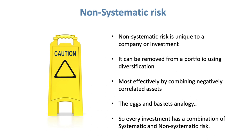This is the whole eggs-and-baskets analogy: if you want to reduce non-systematic risk, you spread your money around. Diversification comes in many shapes and sizes — it's not just about asset allocation. There's geographical diversification, active versus passive management, and company sizes both big and small. Every investment has a combination of systematic and non-systematic risk. You can't remove systematic risk, but you can take steps to reduce non-systematic risk through diversification.